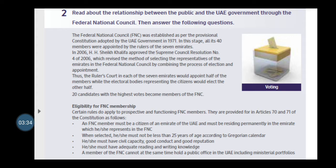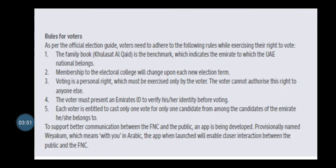To become a member of the Federal National Council, you have to have civil capacity, good conduct, good reputation, adequate reading and writing knowledge, and so on. On the other hand, voters have some rules also. For example, the family book or Khulasat al-Qayt is the benchmark which indicates the Emirate to which the UAE national belongs. The voter must present the Emirates ID, and each voter is entitled to cast only one vote for only one candidate.